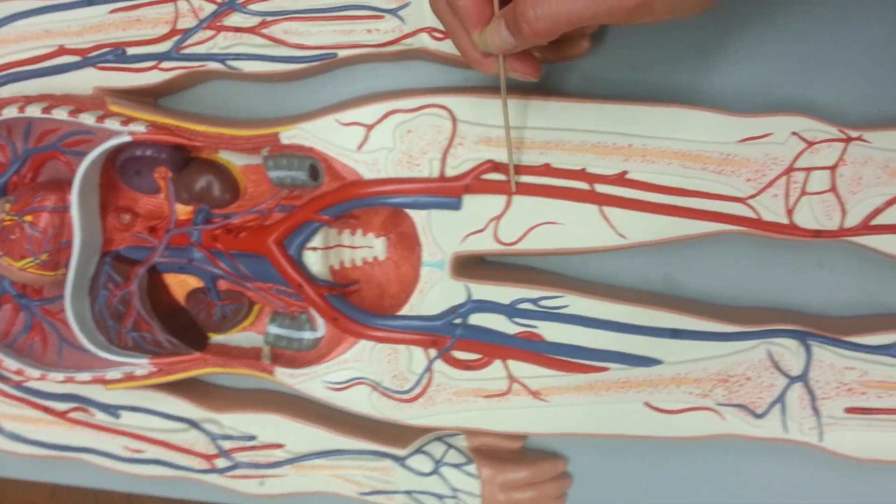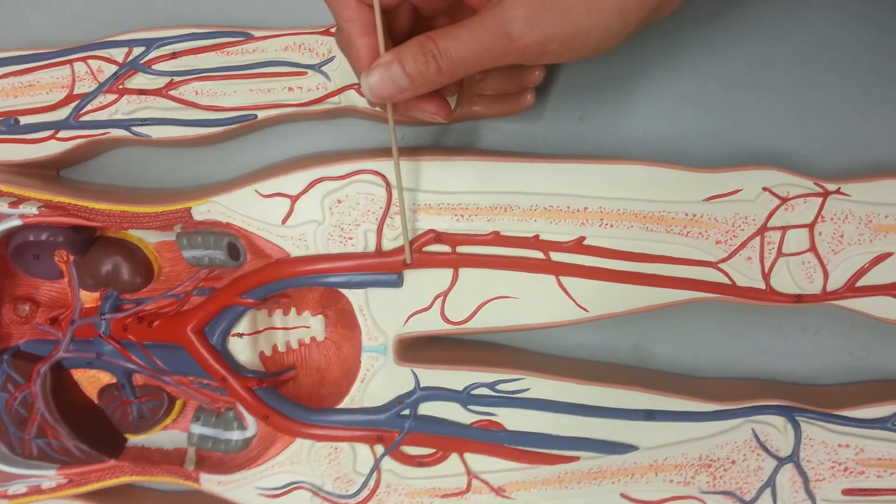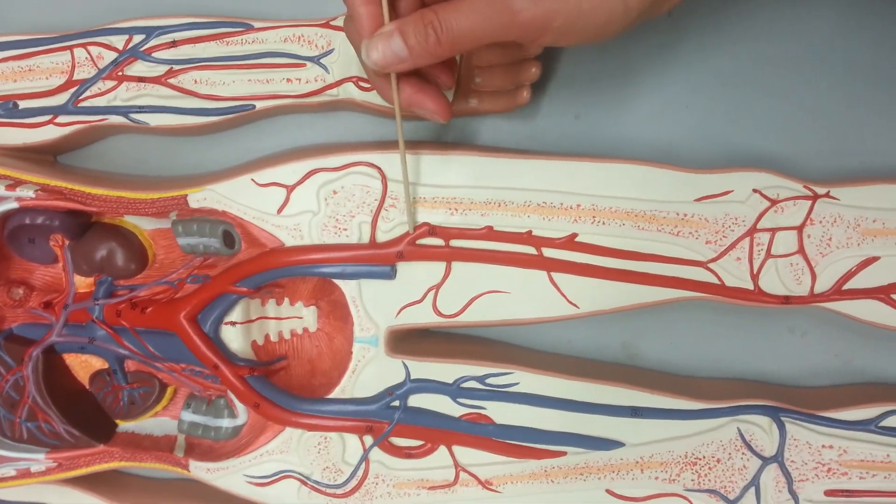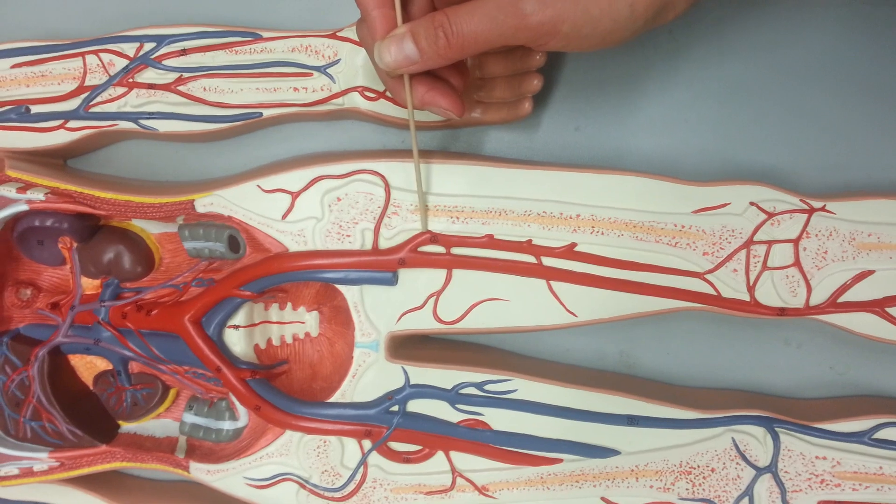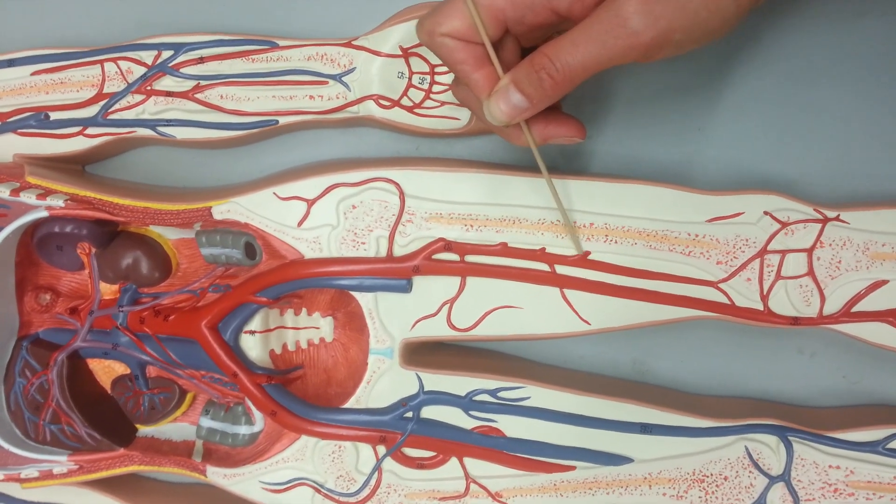The femoral artery will continue straight down the leg. Notice right here the femoral artery split. So this branch off here is the deep femoral artery, so it goes deeper behind the femoral artery.